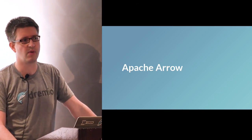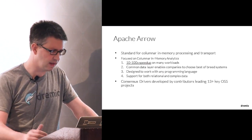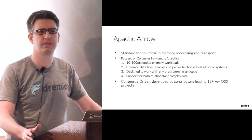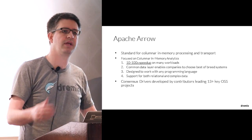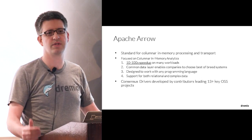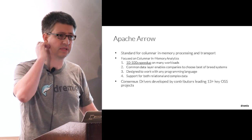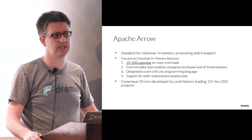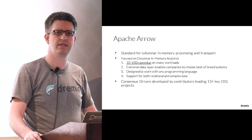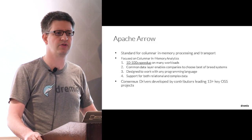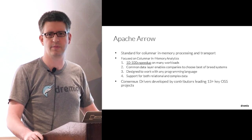Before we even built a product at Dremio, we started a project called Apache Arrow. Its goal is pretty simple: we want a canonical representation of data in memory to speed both interchange between different systems and processing of data in general. Arrow is a columnar in-memory format focused on not only simple data but all sorts of complex data patterns. It's an Apache Foundation project, consensus-driven, with contributors from 13 or 14 different open source projects.